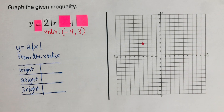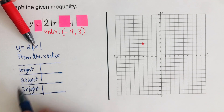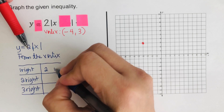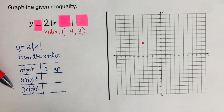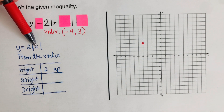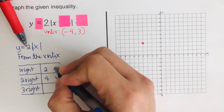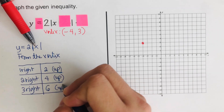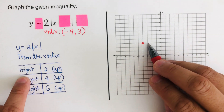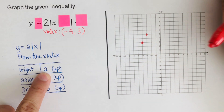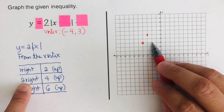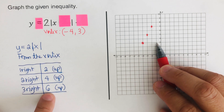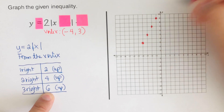We fill in the table. For x equals one: absolute value of one is one, times two is two — positive, so we go up. For x equals two: absolute value of two is two, times two is four — positive, so we go up. For x equals three: absolute value of three is three, times two is six — positive, so we go up. From the vertex: one right, two up — dot here. Two right, four up — dot here. Three right, six up — dot there. Then we mirror across to form a letter V.